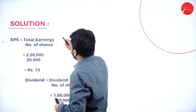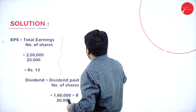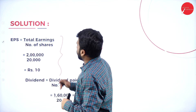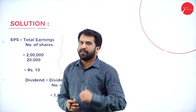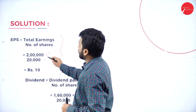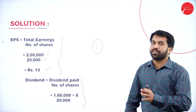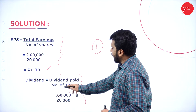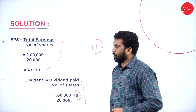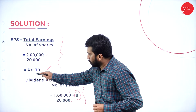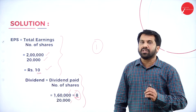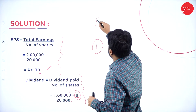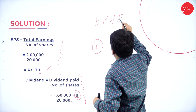To solve this, we apply three formulas. First, find earning per share (EPS) and dividend per share. EPS equals total earnings divided by number of shares: 2 lakh divided by 20,000 equals 10 rupees per share. Dividend per share equals dividend paid divided by number of shares: 1 lakh 60,000 divided by 20,000 equals 8 rupees per share. So your earning is 10 rupees and you have given 8 rupees per share as dividend.